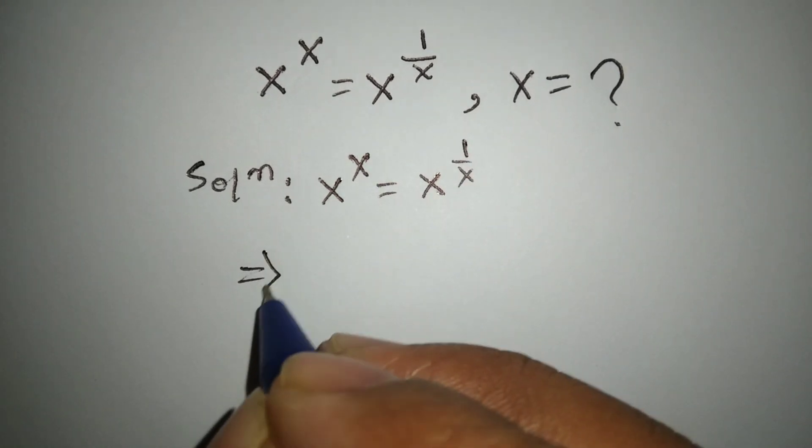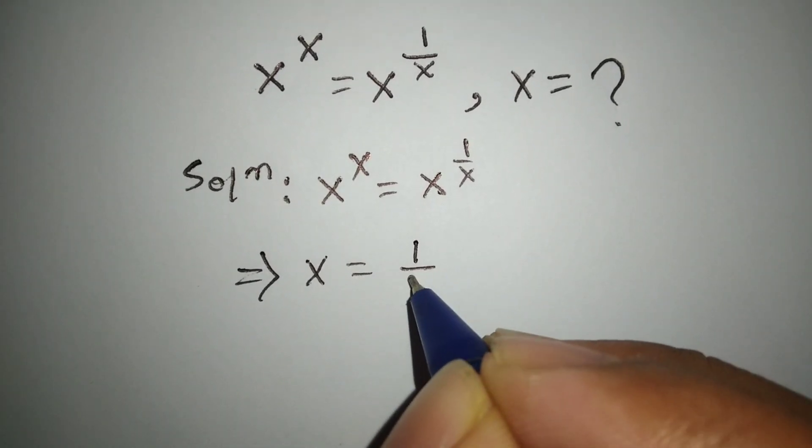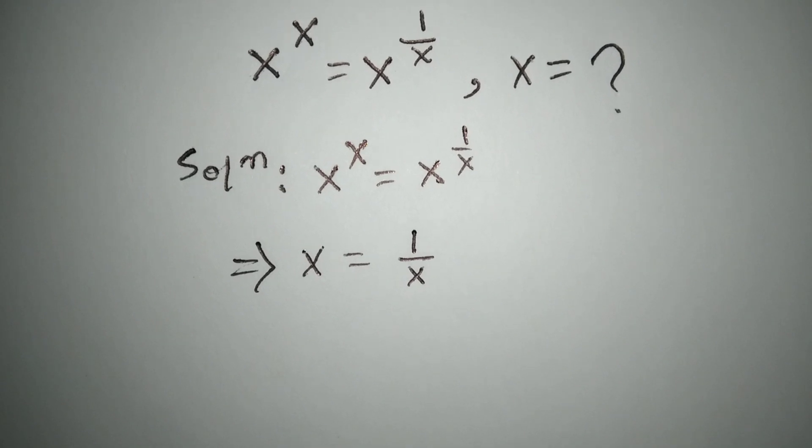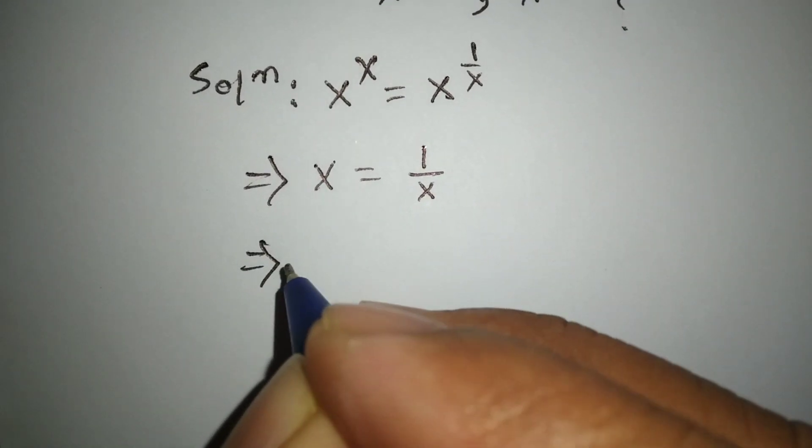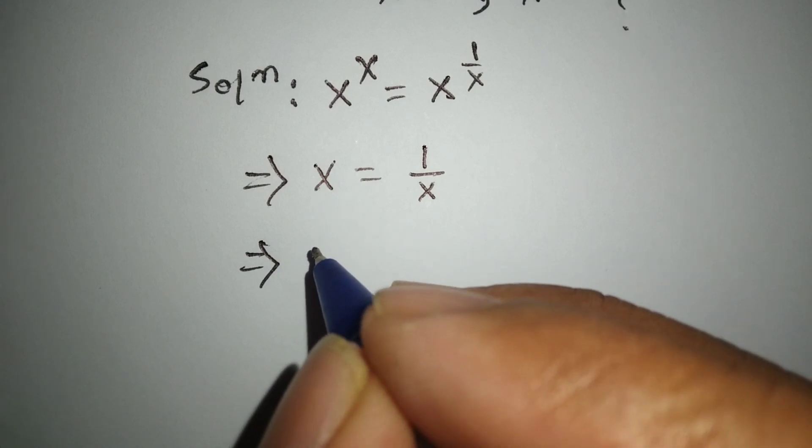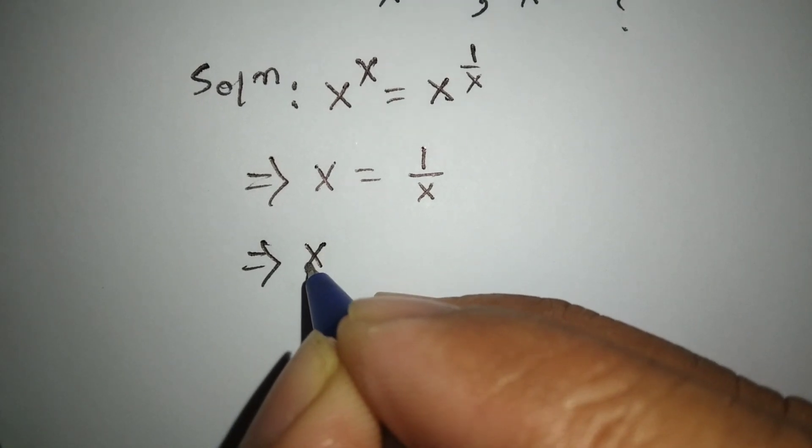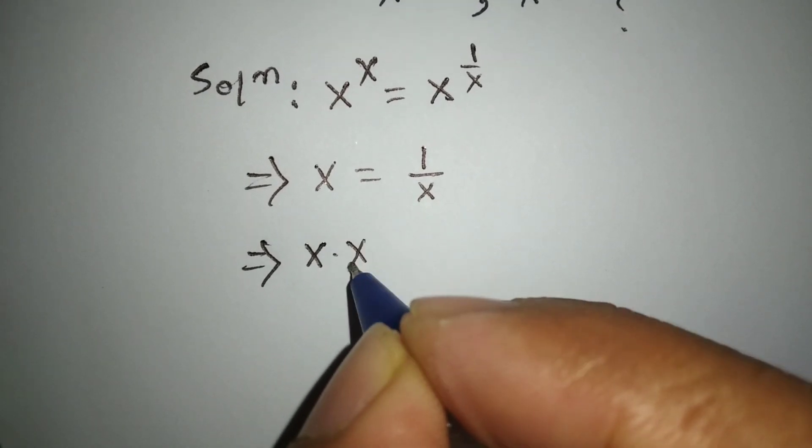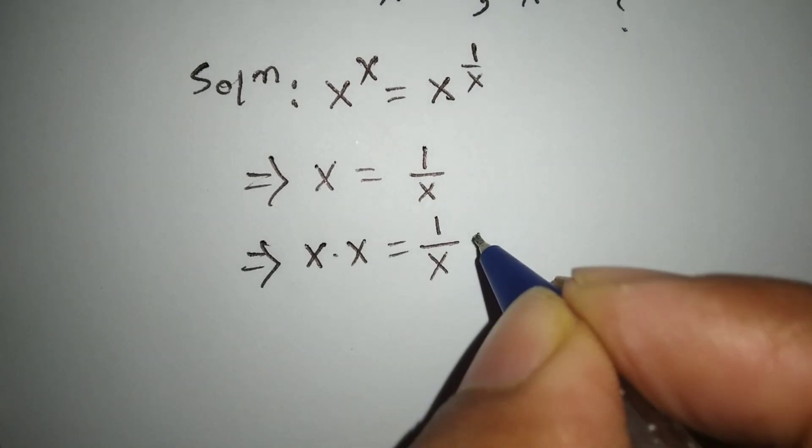So we can write this line as x equals 1 over x. Or we will multiply both sides by x. Here x times x equals 1 over x times x.